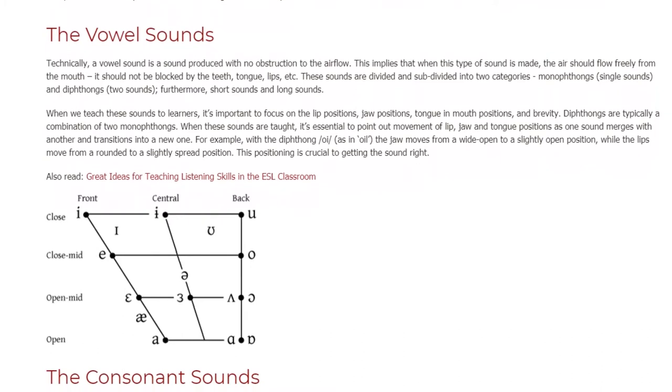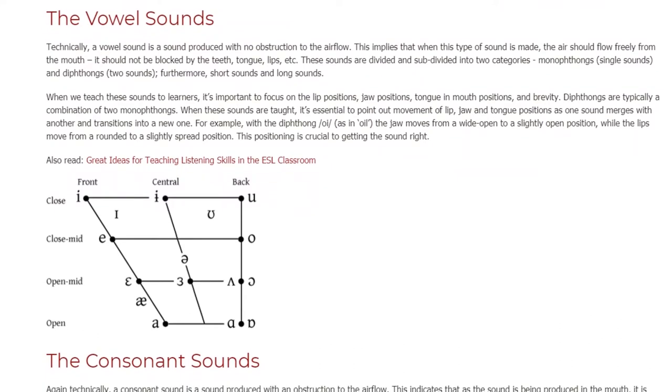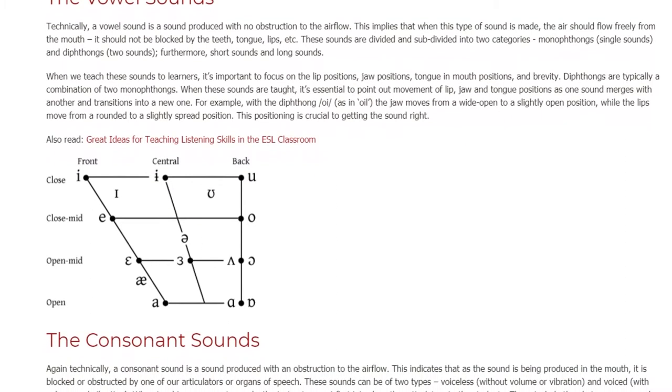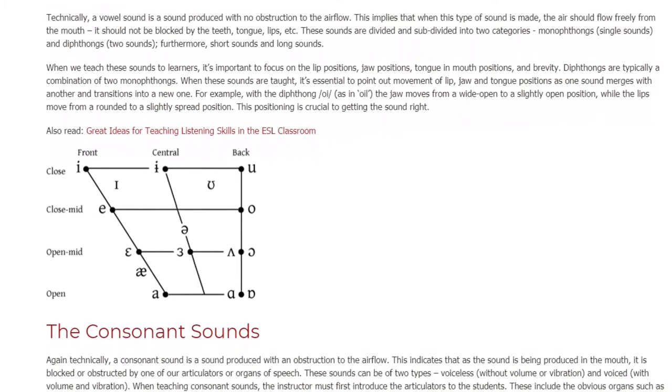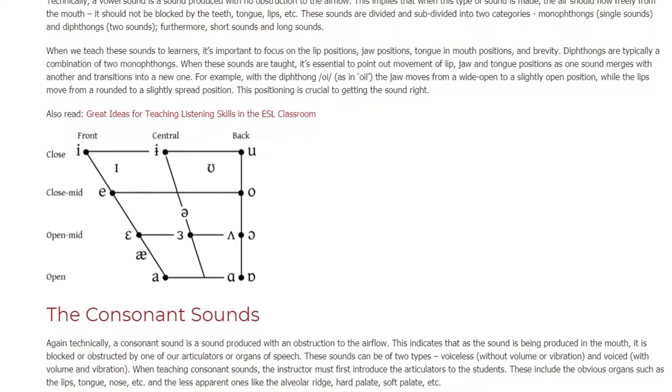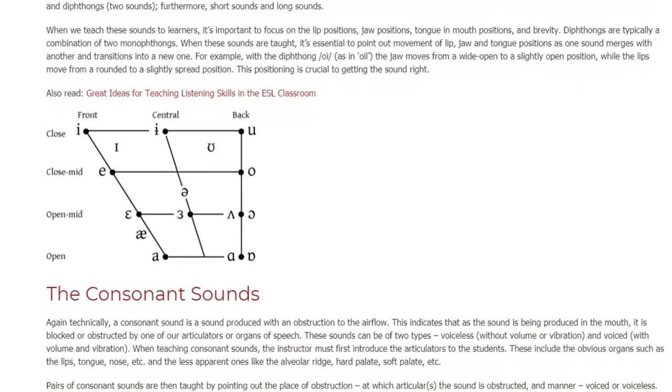jaw and tongue positions as one sound merges with another and transitions into a new one. For example, with the diphthong /ɔɪ/, as in oil, the jaw moves from a wide open to a slightly open position, while the lips move from rounded to a slightly spread position. This positioning is crucial to getting the sound right.